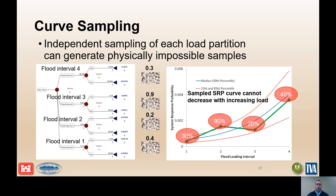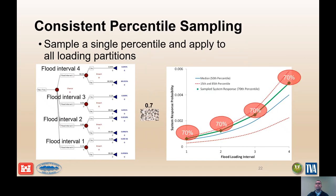Independent sampling of each load partition can generate physically impossible samples. For example, the generated system response curve is not physically possible and is mathematically invalid. A higher flood loading partition, partition 3, cannot have a system response probability that is less than a lower flood loading, partition 2. The system response curve must be monotonically increasing. This is a common mistake that is made when using @Risk and other similar software. Here is the correct approach: all of the sampled system response curves will be internally consistent and monotonically increasing.